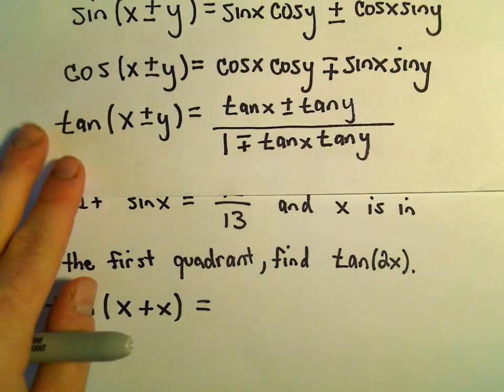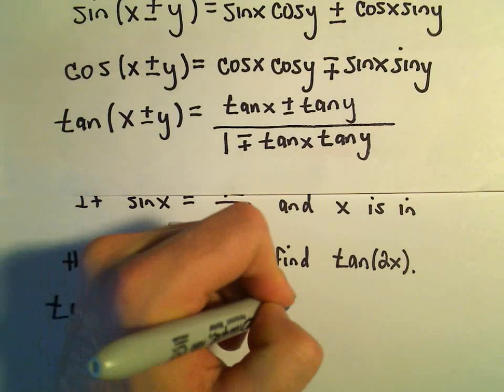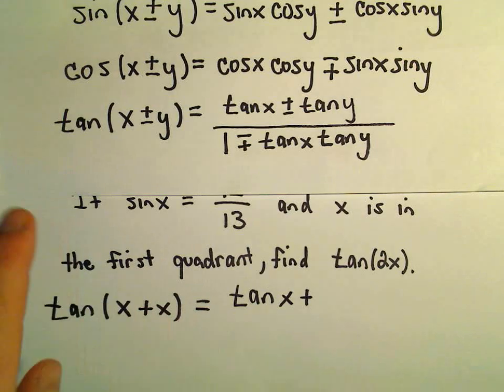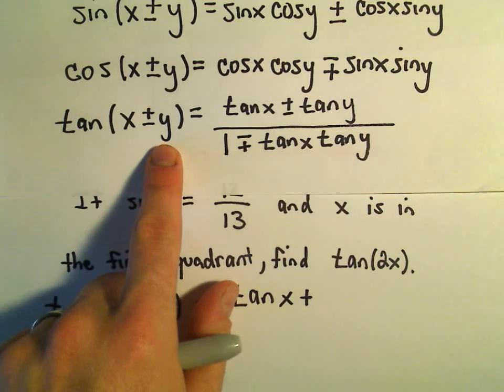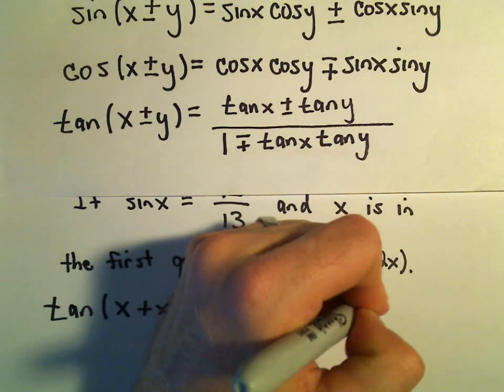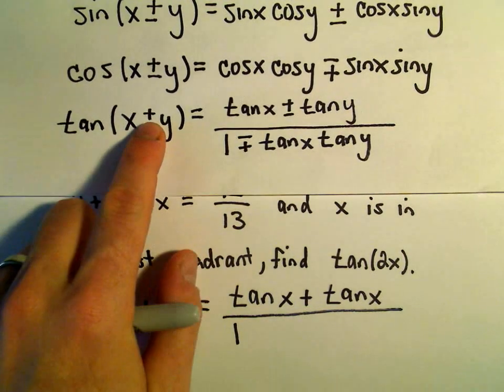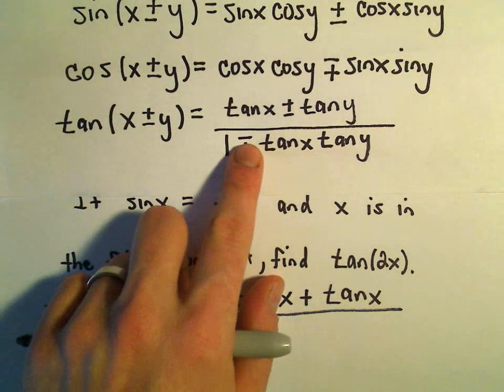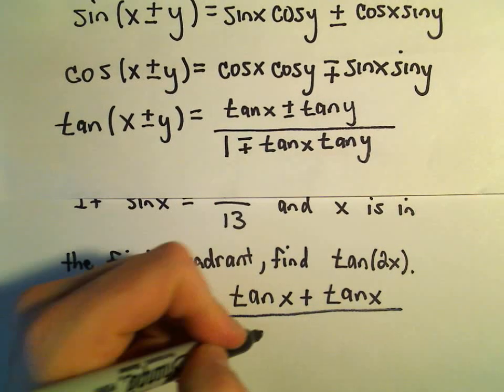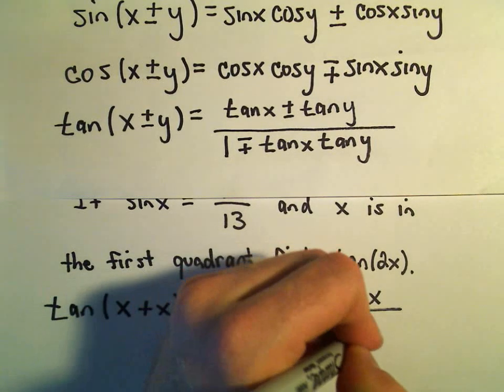And now I'm just going to use our previous identity. It says we'll get tangent of x plus - in this case we don't have a y, we have another x. So we'll get tangent x plus tangent x over 1, and if it's a positive inside, in the denominator we make it a negative. So 1 minus tangent x times tangent x.